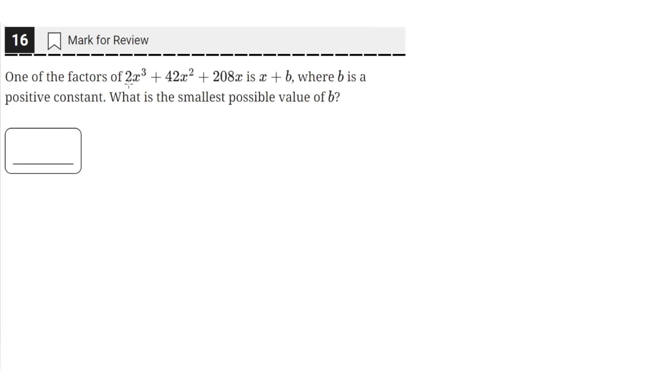One of the factors of 2x cubed plus 42x squared plus 208x is x plus b, where b is a positive constant. What is the smallest possible value of b?